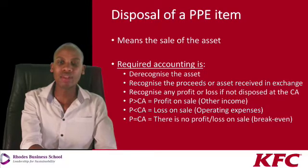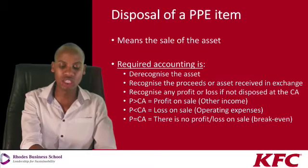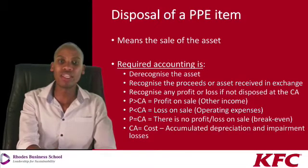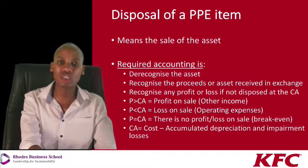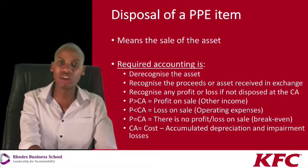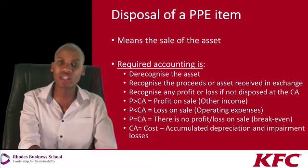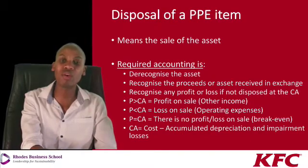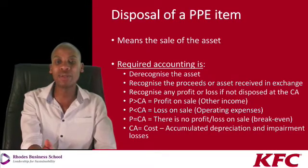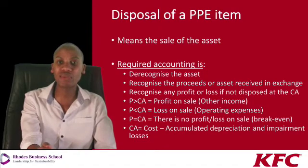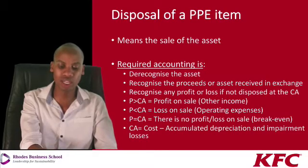If we sell the asset for its carrying amount, there is no profit or loss recognised — it would have been sold at break-even. The carrying amount is our cost — which should always be exclusive of VAT, assuming we're dealing with a VAT vendor buying from a VAT vendor — less the accumulated depreciation and impairment. Importantly, the accumulated depreciation and impairment losses should be from the time the asset was purchased to the date of disposal.